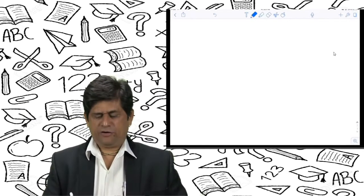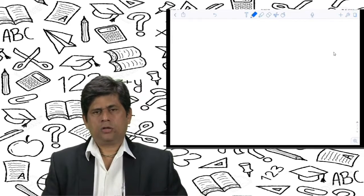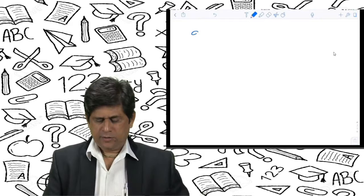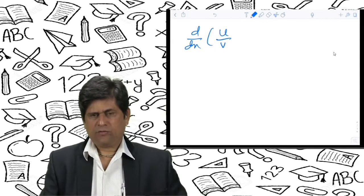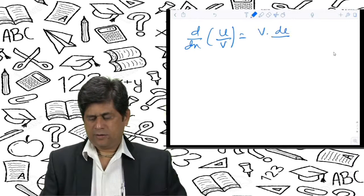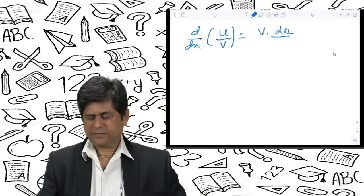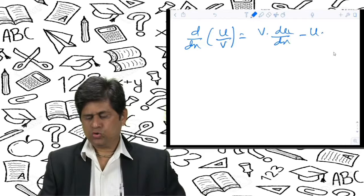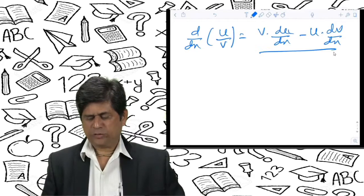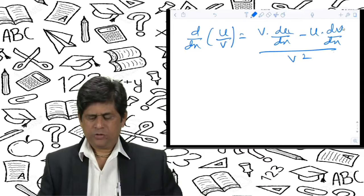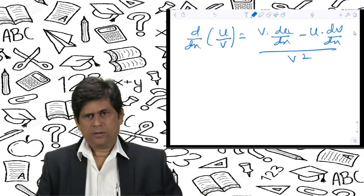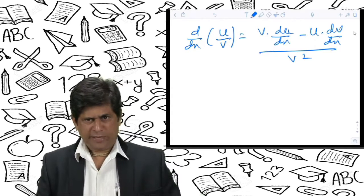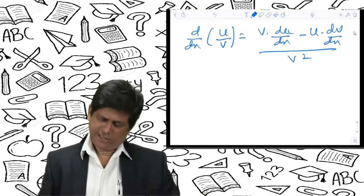Now we will see the derivative of a quotient — functions given in the form of n upon d. The formula is: d/dx(u/v) = [v · du/dx − u · dv/dx] / v². You can remember it as: denominator into derivative of numerator, minus numerator into derivative of denominator, all upon denominator squared.